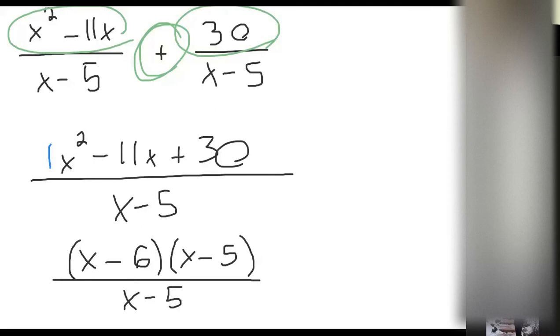Okay, so my prediction came true. Look at the numerator and the denominator. What happens? x minus 5 and x minus 5 cancel out, right? And what am I left with? x minus 6.